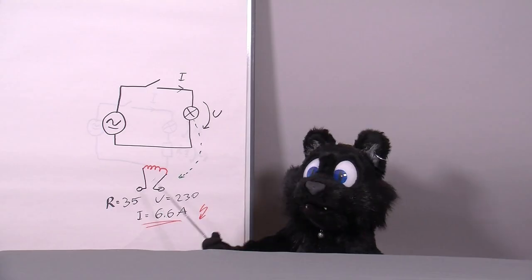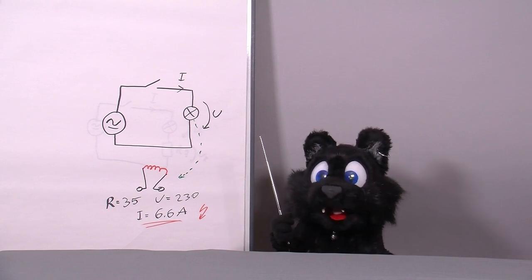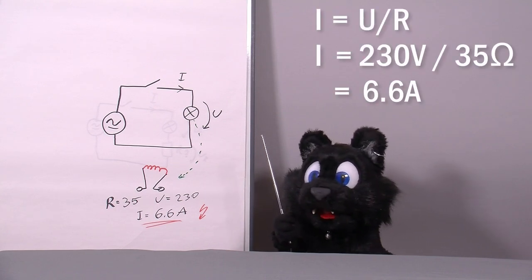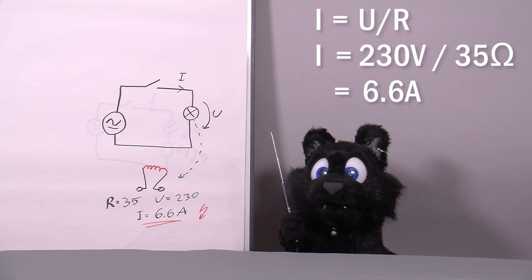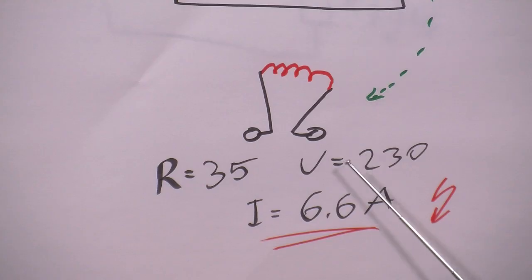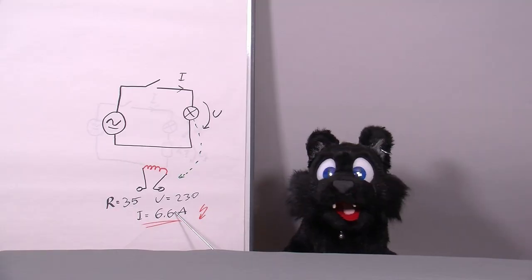If we apply Ohm's law, we can see that the expected current would be the operating voltage divided by the resistance, so 230 divided by 35, which is about 6.6 amps.